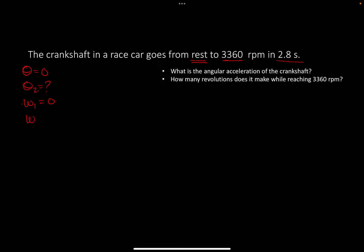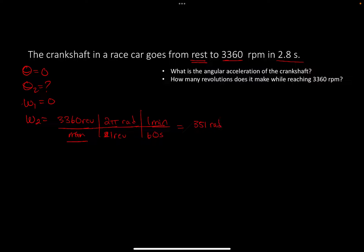W2 was given to us: 3360 revolutions per minute. I'm going to convert this to radians per second. One revolution is 2 pi radians, and one minute is 60 seconds. After canceling units, the angular speed W2 comes out to 351 radians per second.